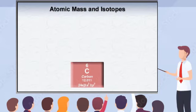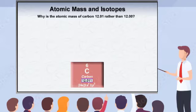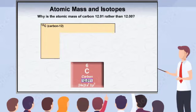Earlier, you learned that the atomic mass is a relative value, and that the atomic mass of hydrogen is one-twelfth the weight of a carbon atom. Then why is the atomic mass for carbon 12.01 rather than 12.00? The reason is that an atomic mass unit is based on one-twelfth the weight of what is known as the carbon-12 isotope.